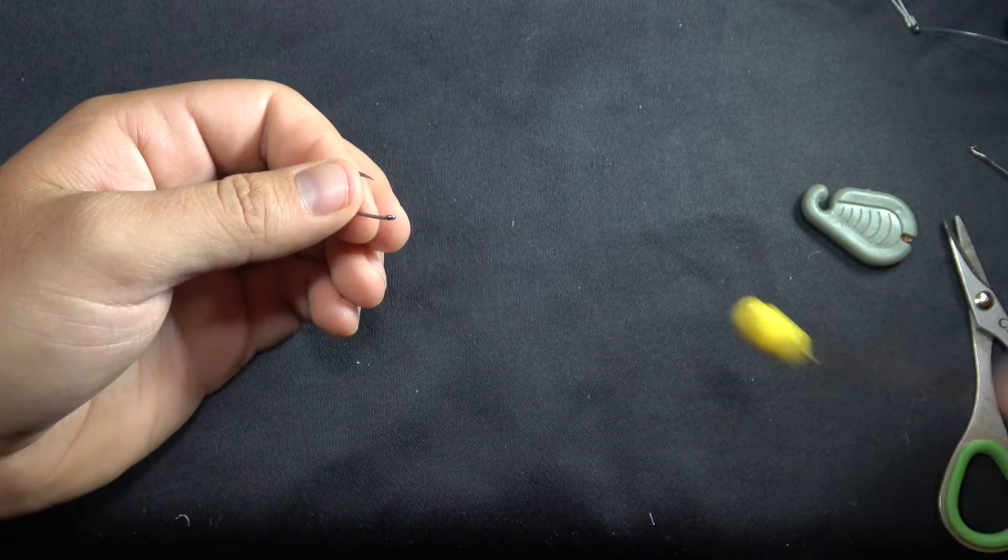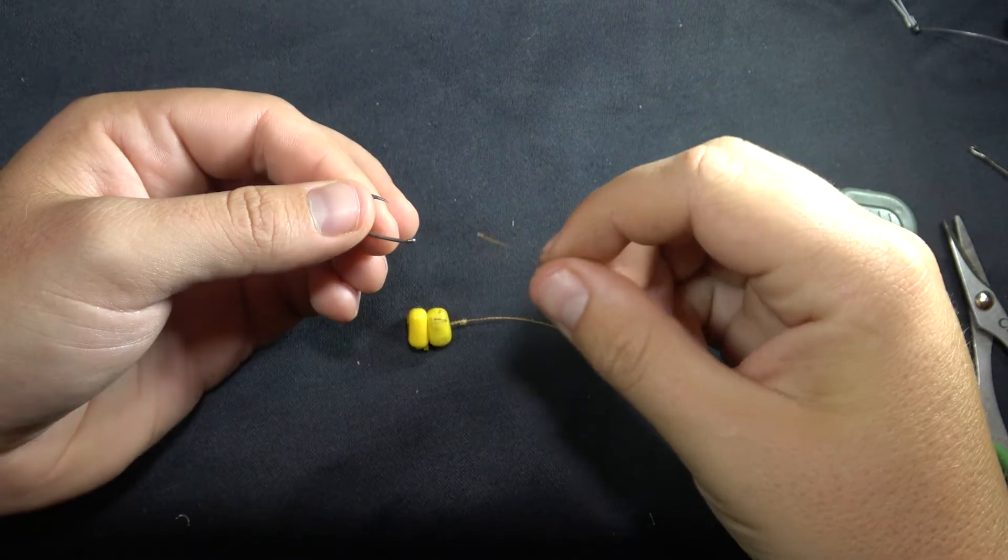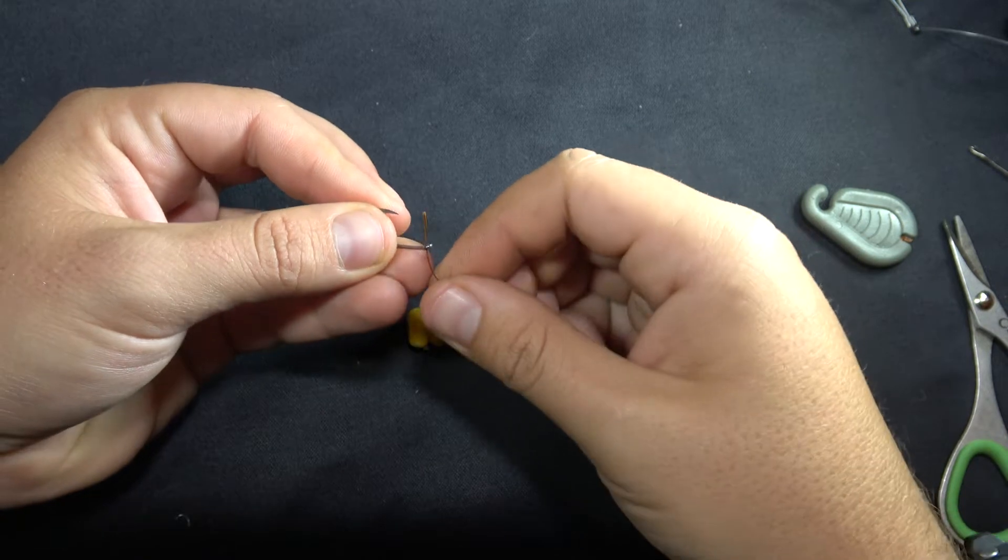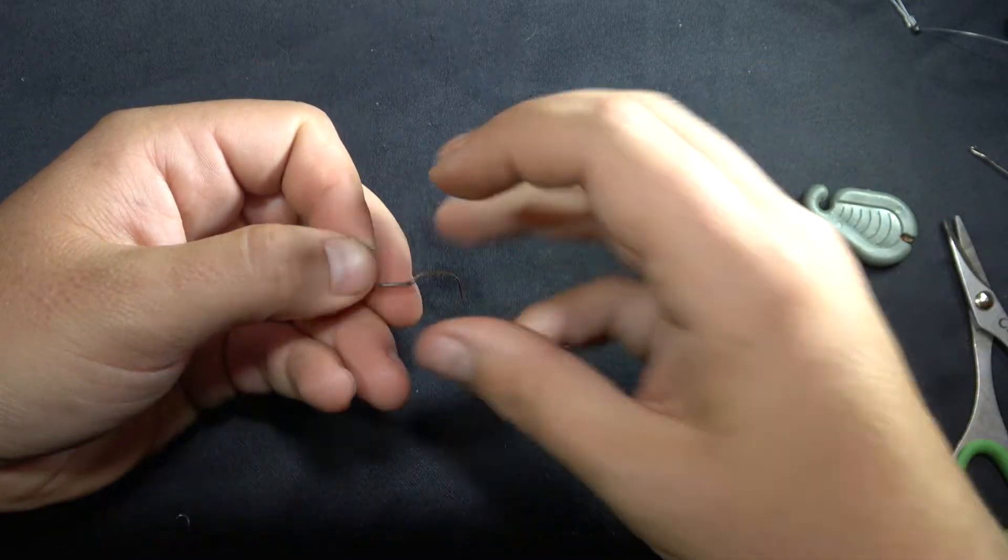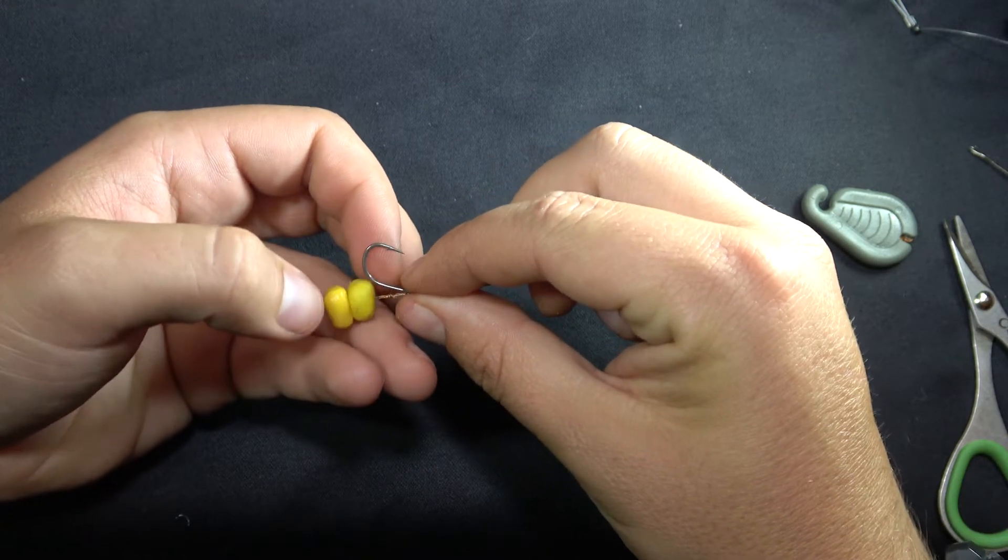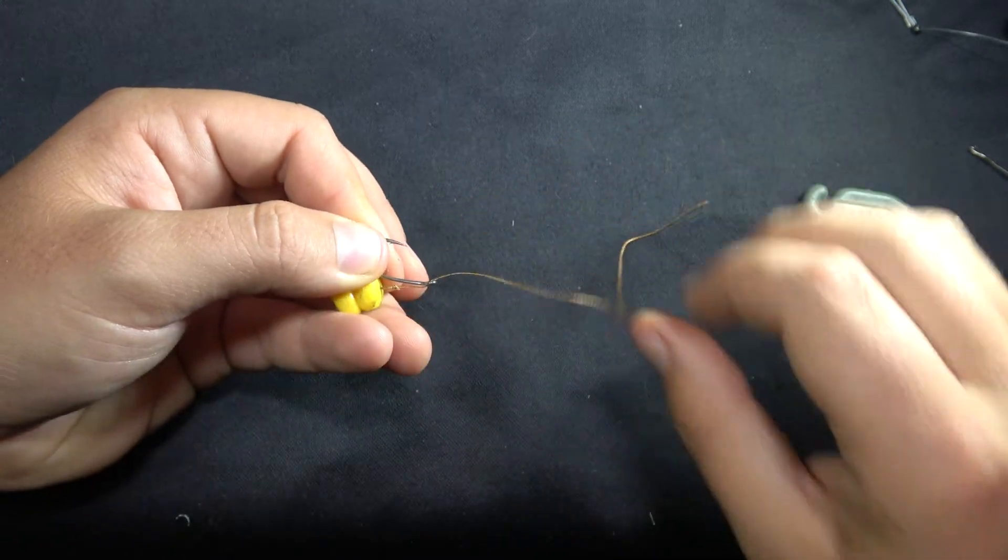Grab your Gardner size 6 wide gape and thread your braid through the eye from the back of the hook to the front of the hook. This is very important. Pull your line through and then create the length of your hair. With this rig I like to keep a short hair.